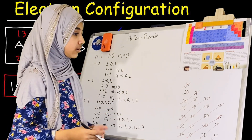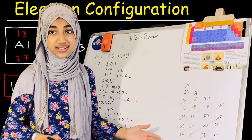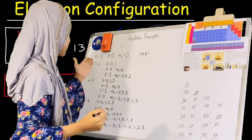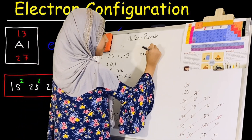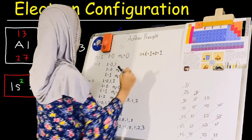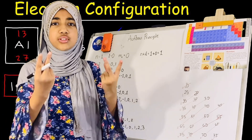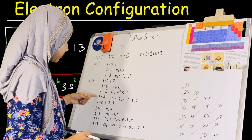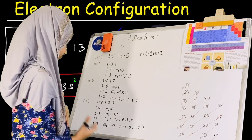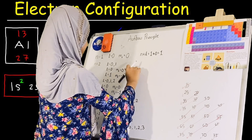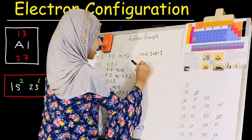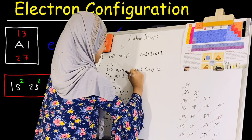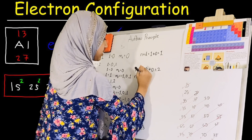The next step in proving the electron configuration order is to calculate n plus l for each case. For n equals 1, n plus l is 1 plus 0, which equals 1. For n equals 2, since we have two values of l, we do this separately: n plus l equals 2 plus 0, which is 2; and n plus l equals 2 plus 1, which is 3.